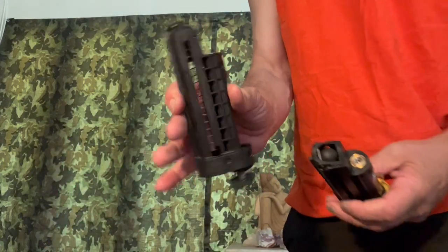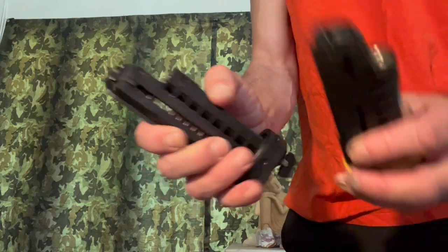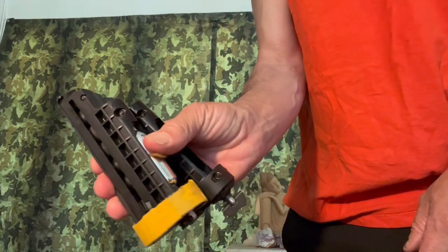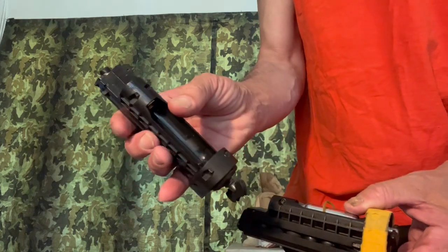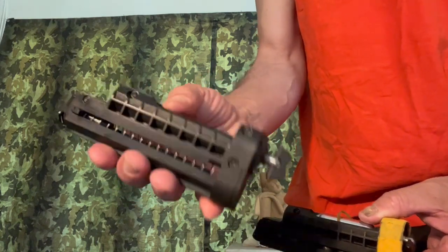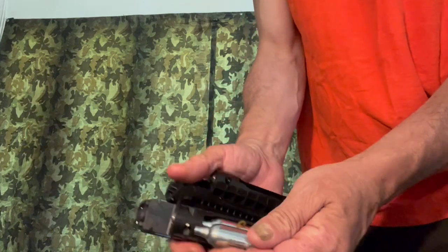So, I guess Grimberg says that First Strike is discontinuing their standard magazines. So Grimberg won't be able to modify them to take 12 gram CO2.